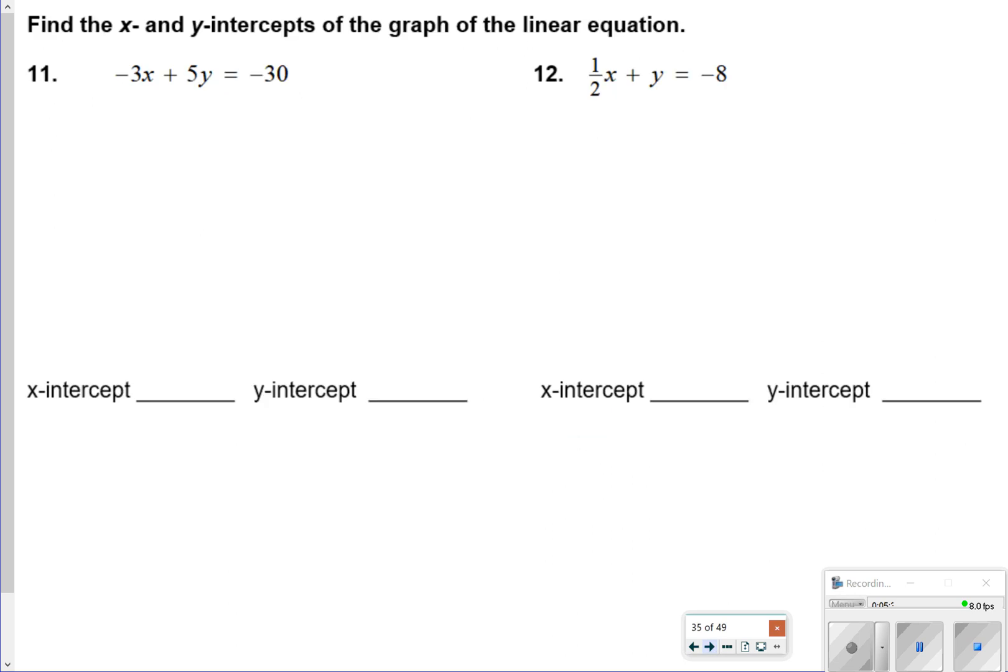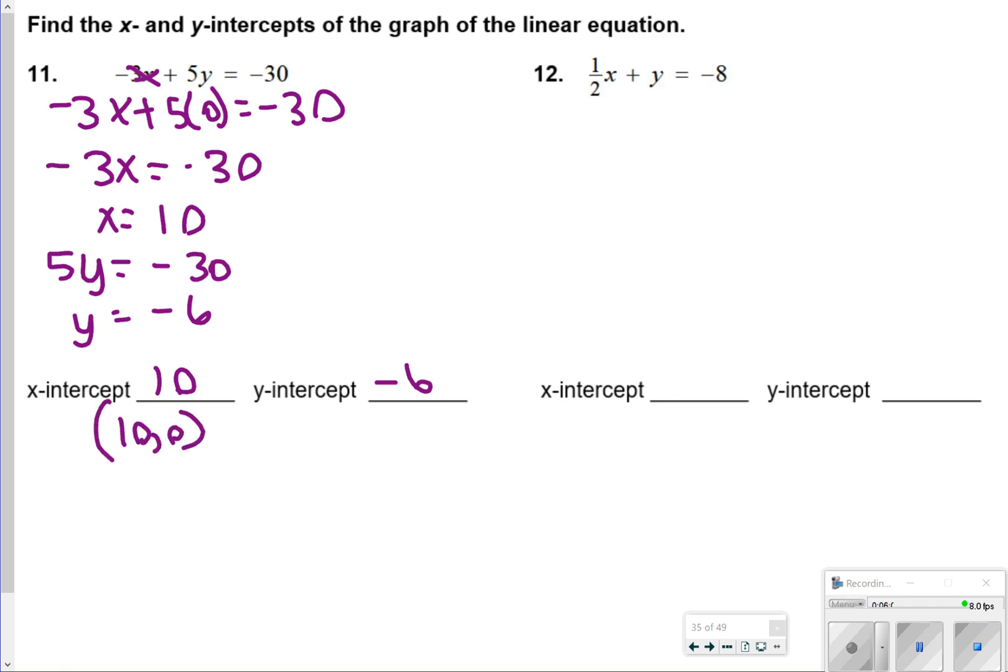For number 11 and 12, you're just trying to find the x and y intercepts. So what we're basically doing to find the x intercept is replacing y equals 0. So negative 3x plus 5 times 0, is equal to negative 30. And then solving, so that's basically negative 3x is equal to negative 30, or x is equal to 10. The y intercepts do the opposite, so you're basically crossing off the x's. So for the y intercept, 5y is equal to negative 30. That means your y intercept is equal to negative 6. So you can also rewrite these as (10, 0), and (0, -6).